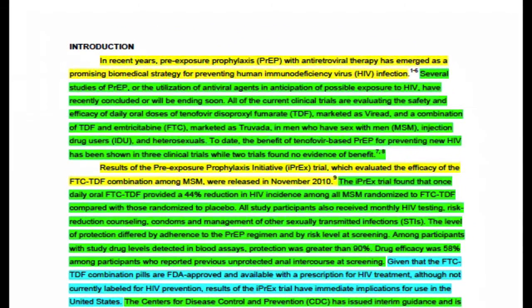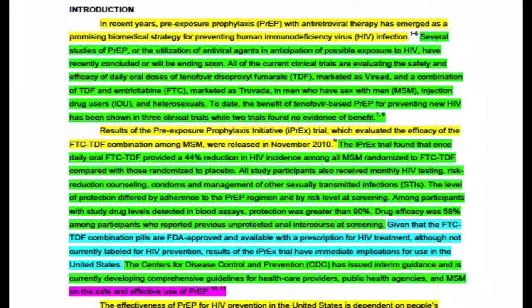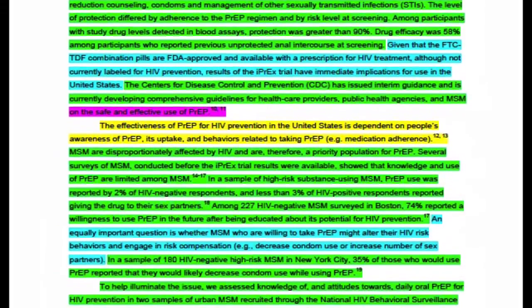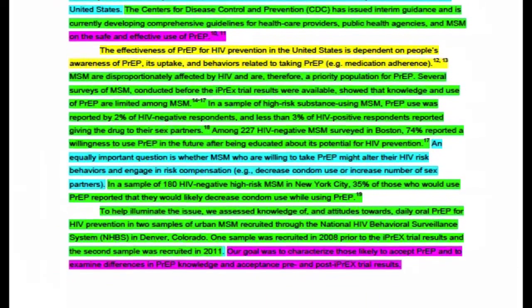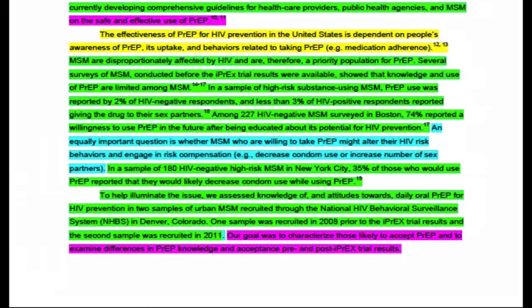Notice also that the first topic sentence is about how pre-exposure prophylaxis, or PrEP, with antiretroviral therapy might help prevent HIV infection. And the very last sentence is a link about how the researcher's goal was to figure out who would be likely to accept PrEP. In this way, the entire section behaves like a complete meal.